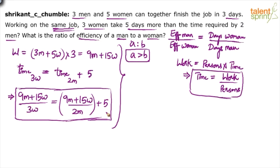So that's the first method — use options to verify. Without options, you need to frame and solve two equations. We've only set up one equation here. If options aren't available, two equations with variables M and W must be formed and solved.